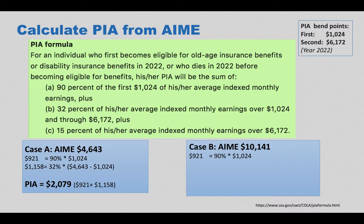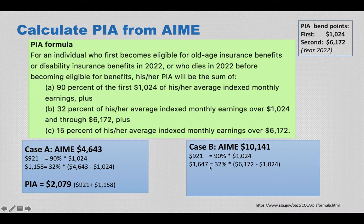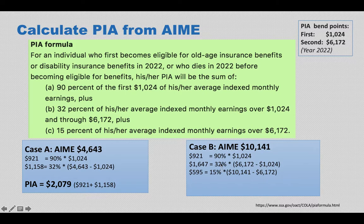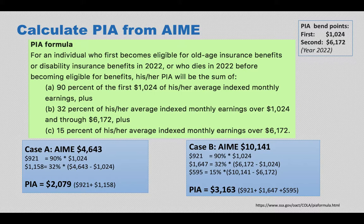For Case B, the AIME is much higher. The first bending point calculation is the same — $921. Because Case B's AIME exceeds the second bending point, the 32% portion between the two bending points gives $1,647. The 15% portion on earnings above $6,172 is also added. Even though Case B's AIME is much higher, the later portions count less toward the benefit. Adding all three components together, Case B's PIA is $3,163, which is Case B's Social Security benefit at normal retirement age.